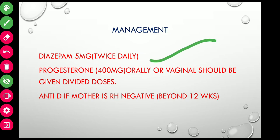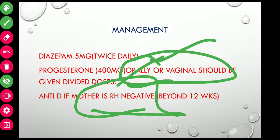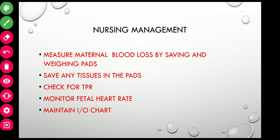For management: diazepam 5 mg should be given to relieve pain, and the mother should be given rest until bleeding stops. Progesterone 400 mg orally or vaginally in 2 divided doses should be given. Anti-D should be given if the mother is Rh-negative, but only beyond 12 weeks — it is not recommended before 12 weeks.